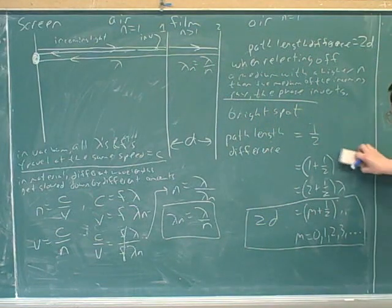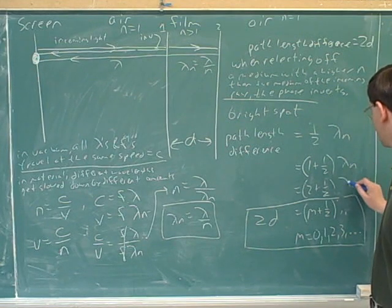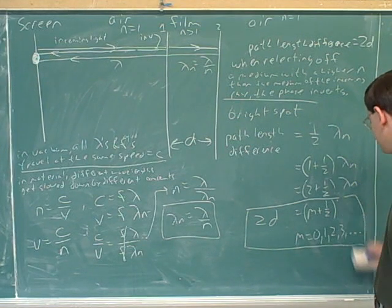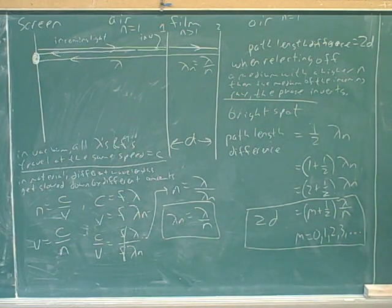So over here, I should not have been putting in lambda. I should have been putting in the new wavelength, which is lambda over N.